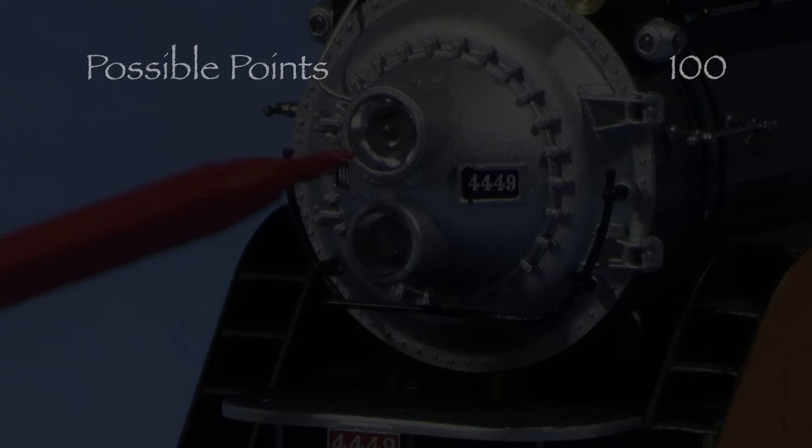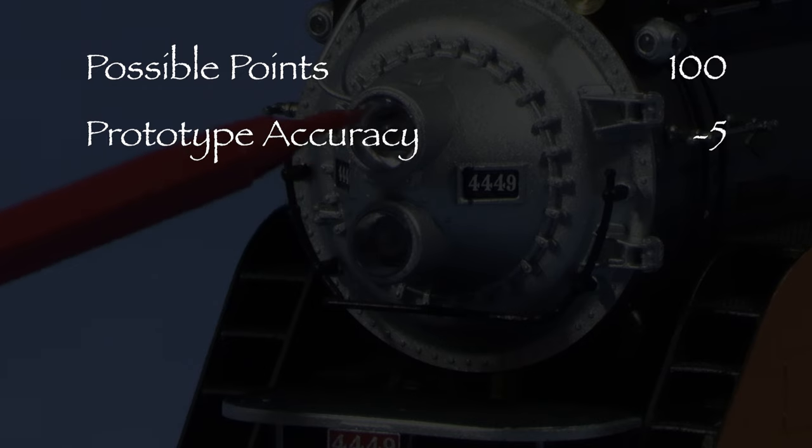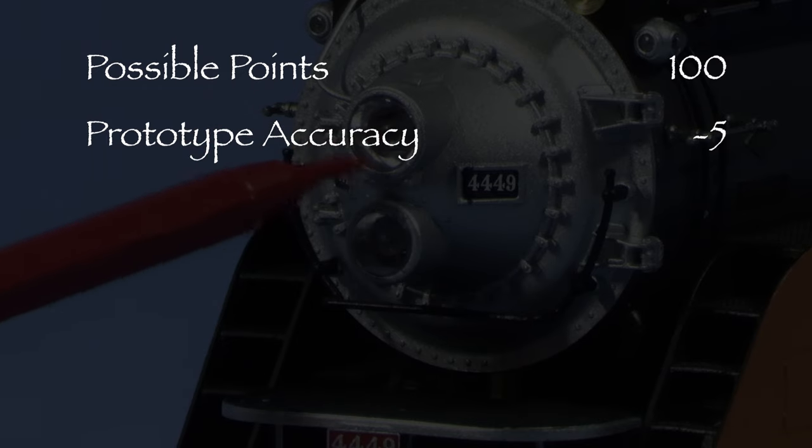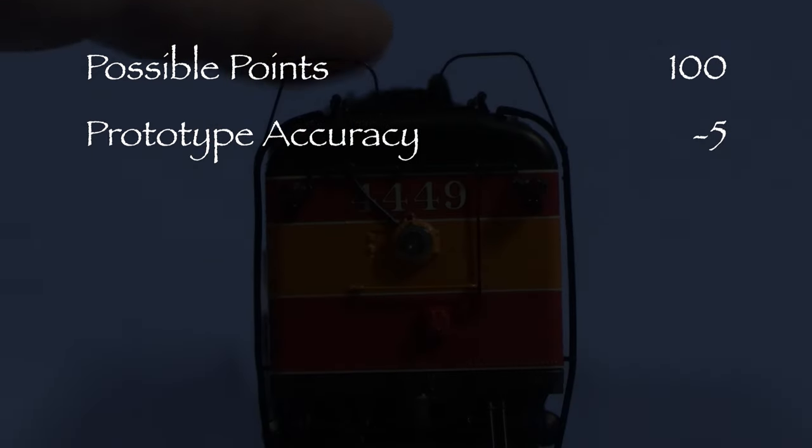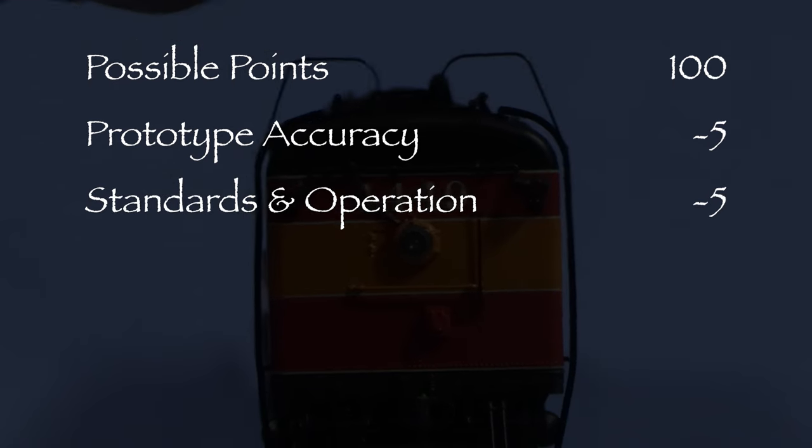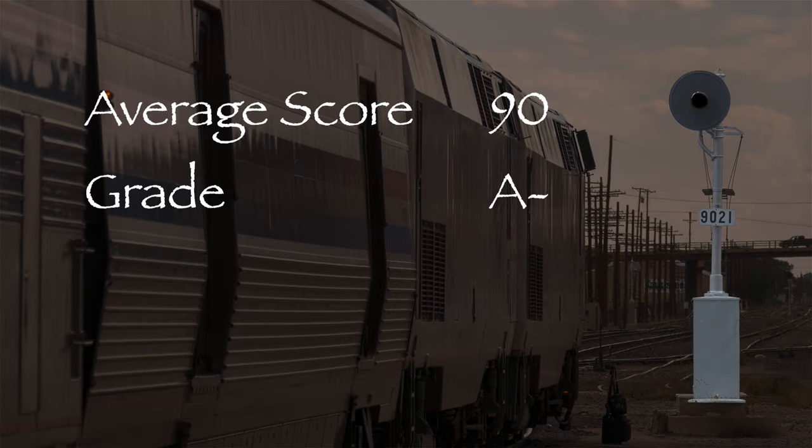Let's see what we've got. The upper headlight should have two separate small lenses inside the larger lens housing, so I took five points in the prototype accuracy category. The tender wobbles, so I took five points in the standards and operation category. That leaves us with 90 out of 100 possible points, which earns an A-. This is a beautiful model and it deserves a green signal.